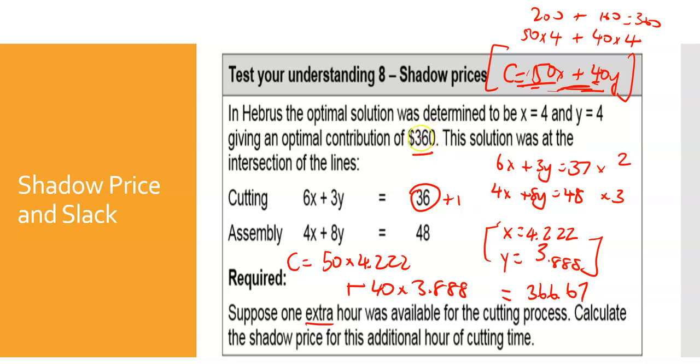You take all this and plug it in again to this equation. What you get is 50 times 4.222 plus 40 times 3.888, and you now arrive at a new contribution of 366.67. The key point is shadow pricing is what is the additional contribution. So I have an additional contribution of six pounds seventy. Now this is a clincher - this is why this is important.